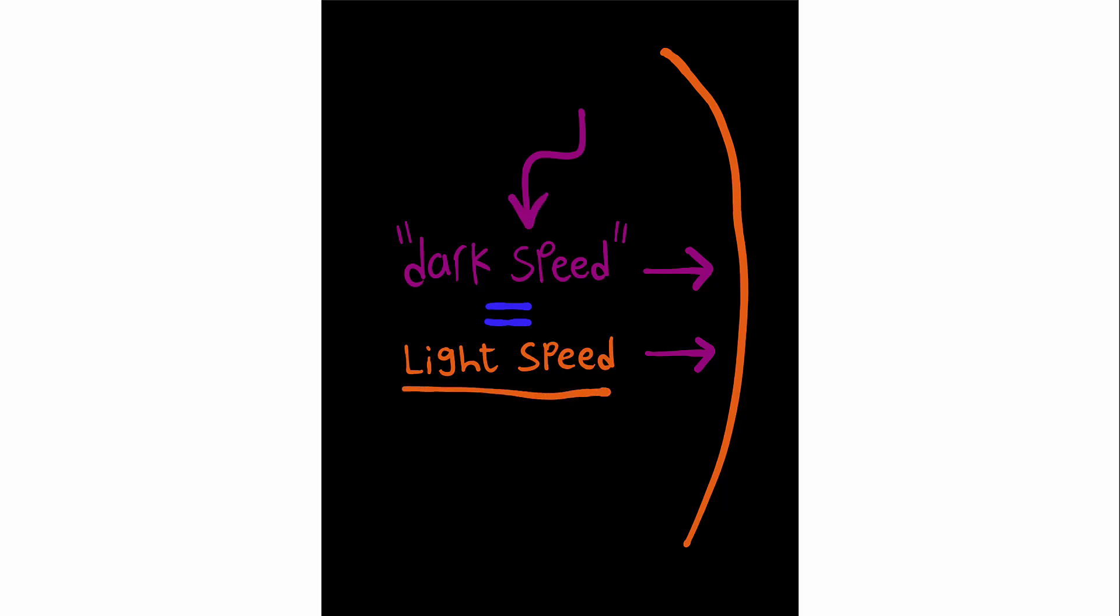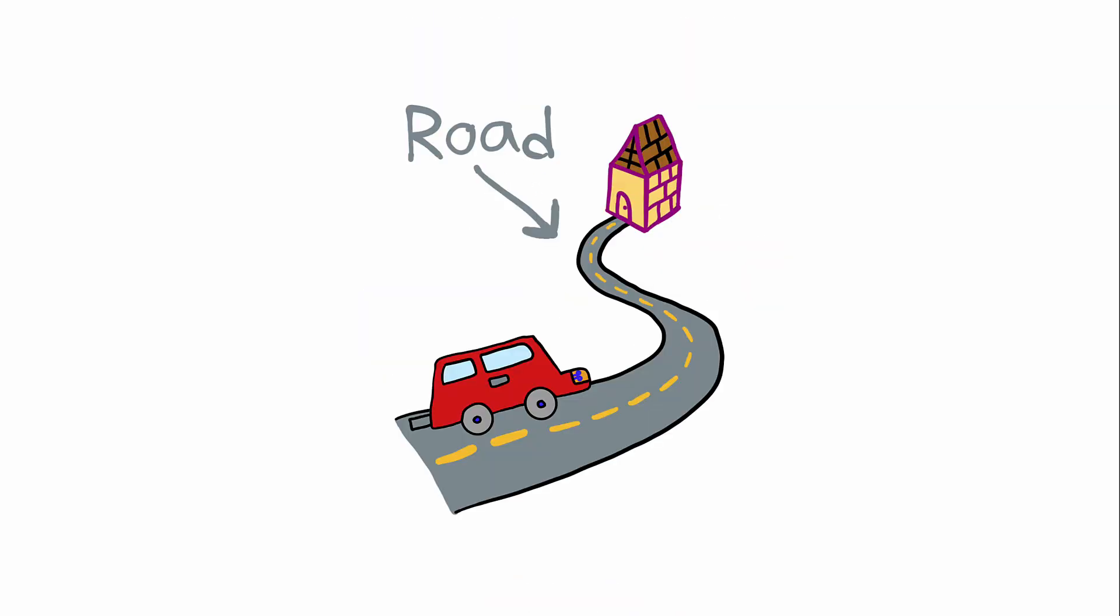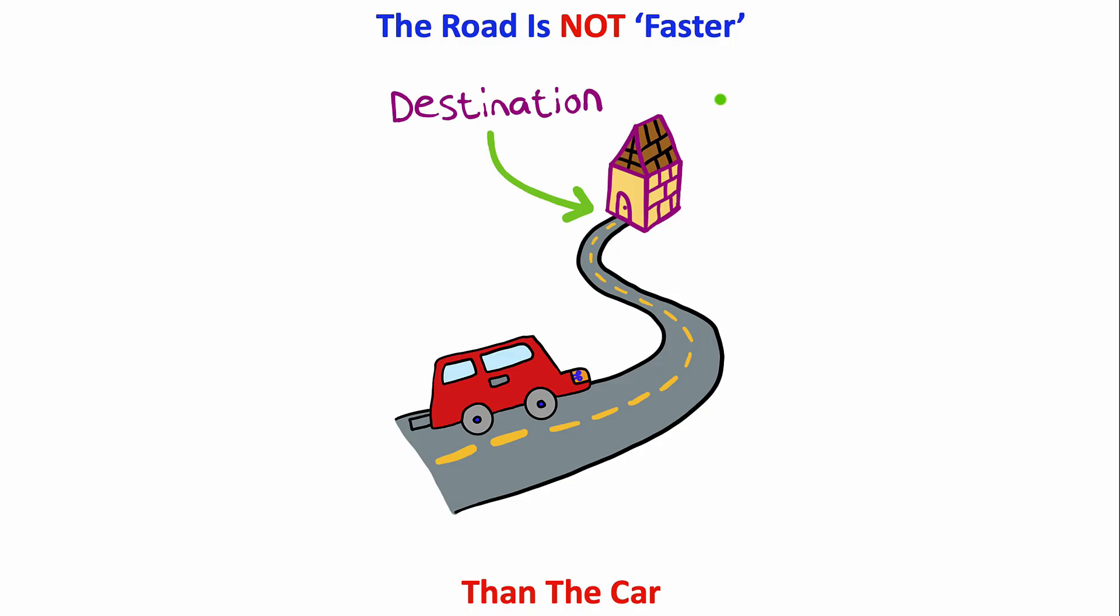It's just the last of the photons before the light source was terminated. So saying that darkness is faster than light is like saying the road we drive on is faster than our car since the road has beat us to our destination. It just doesn't work that way.